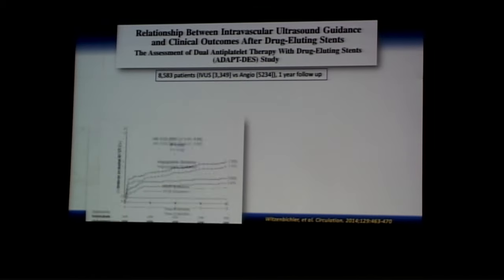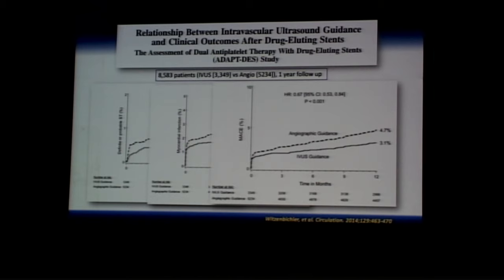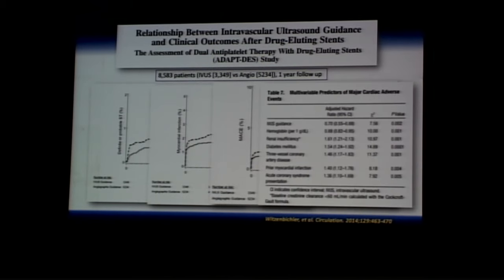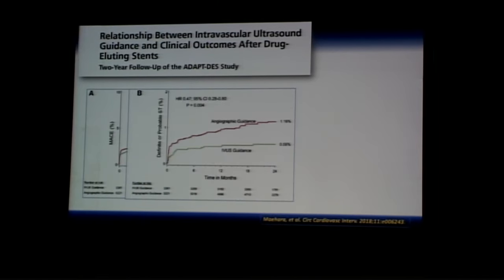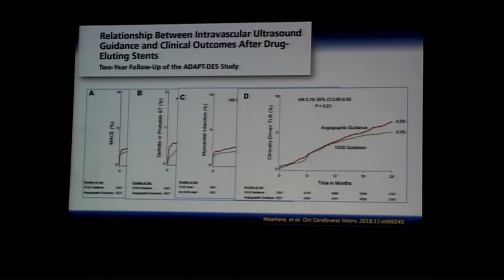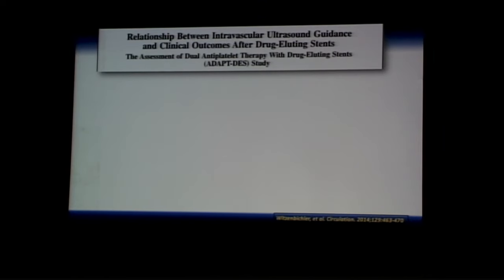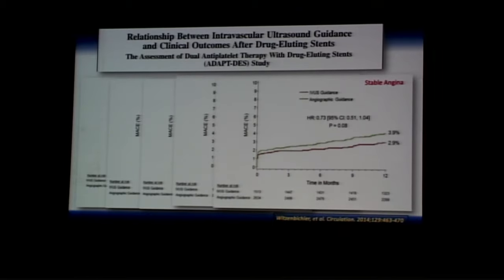What is the evidence for IVUS in routine practice? The ADOPT-ES study, the largest registry of 8,500 patients, showed IVUS usage was associated with reduction in definite or probable stent thrombosis, myocardial infarction, and overall MACE events. In multivariate analysis, IVUS usage was an independent predictor of MACE reduction. At two-year follow-up, IVUS also reduced clinically driven target vessel revascularization. Sub-analyses showed IVUS benefit extended from complex to simple PCI, and from STEMI and unstable angina to stable coronary artery disease.